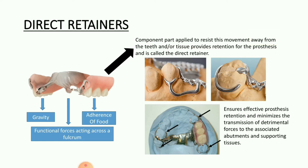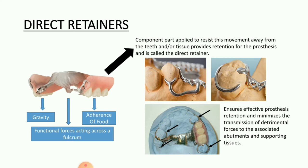The direct retainer ensures effective prosthesis retention and minimizes the transmission of detrimental forces to the associated abutments and supporting tissue. As we can see in the picture, the direct retainer encircles the tooth as much as possible, and this encirclement over the tooth surface provides retention to the prosthesis. The main function of the direct retainer is to resist the movement of the prosthesis away from the teeth or tissue.